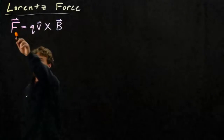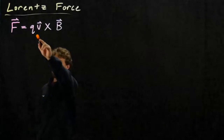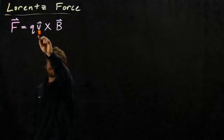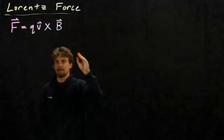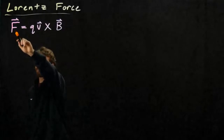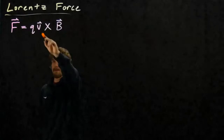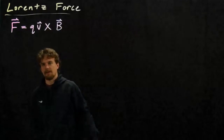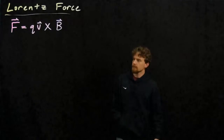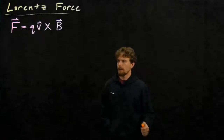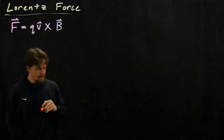We have this equation: the vector force on a charge Q that's moving with velocity V in a magnetic field B. The vector force is equal to Q times V — where V is a vector — crossed with B, where B is a magnetic vector field. The fact that this is a cross product is important and interesting.